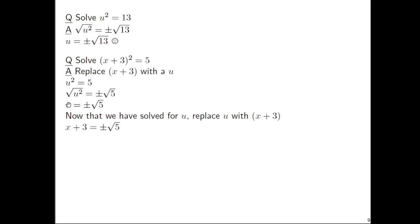So this u here now becomes x+3, and then copy the equal sign, copy the ±√5. Now to solve for x, we just need to subtract 3 on both sides. So I chose to write the -3 in front, so this is x = -3 ± √5.